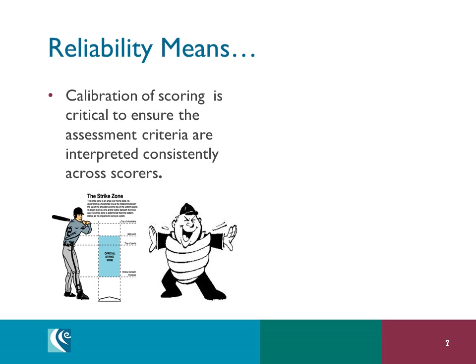The question of reliability asks: are the criteria for proficiency understood by all scorers and students? If two teachers look at the same rubric and the same student work, will they come up with the same score? We use an umpire as our analogy. In baseball, the strike zone theoretically is an extremely well understood measure, but umpires have to work assiduously to make sure they are scoring consistently.